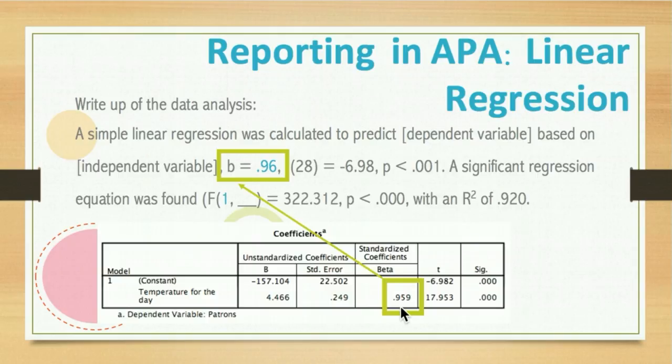In your coefficient table, it's going to provide us the information on the predictor variable. This gives us information we need to predict the number of patrons at the pool based on the temperature for the day. We can see that both the constant and the temperature for the day contribute significantly to our model by looking at the SIG column, which is your significance value. Your B value and their significance are important statistics.